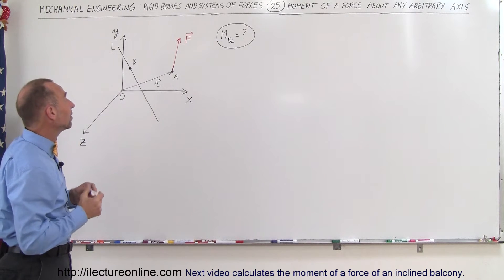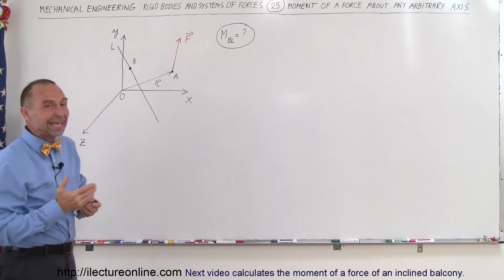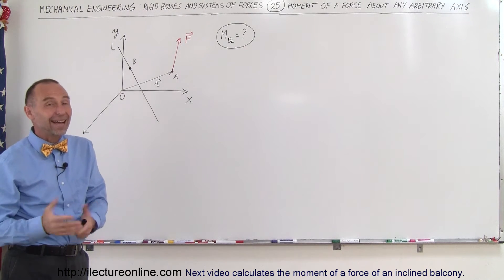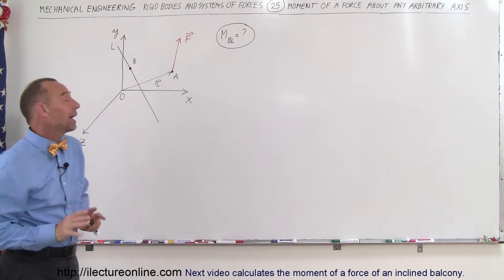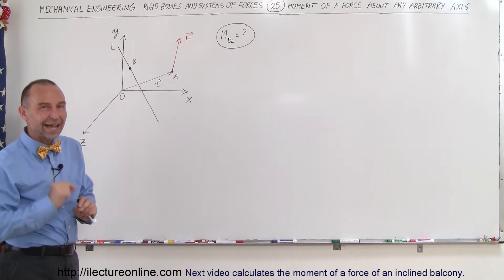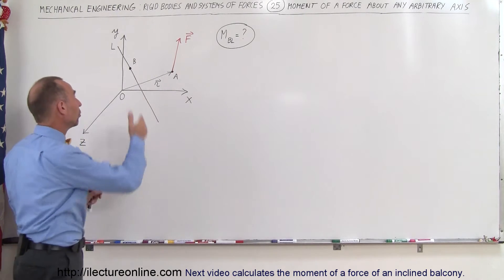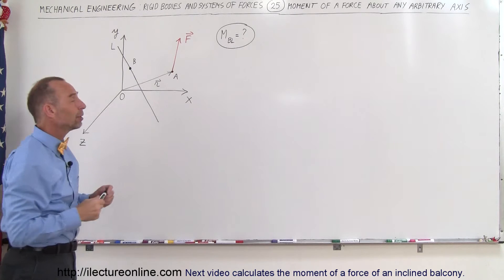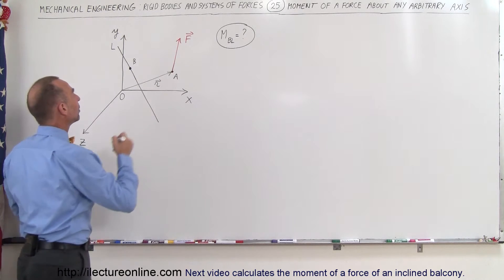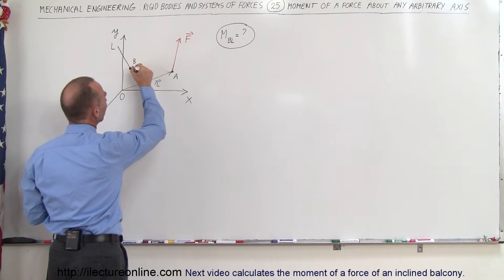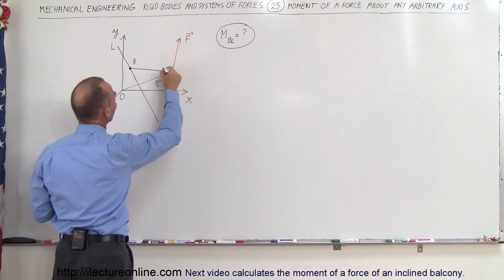The way to do that is first of all to pick any arbitrary point on that line. It really doesn't matter which one it is — you will always get the exact same result. So we'll pick an arbitrary point, label it B.